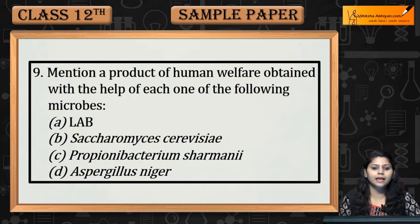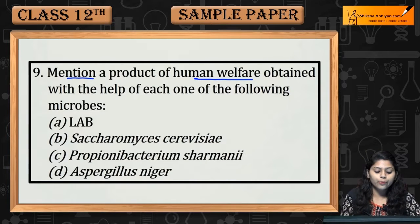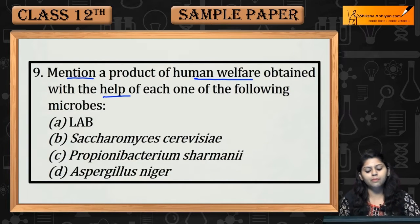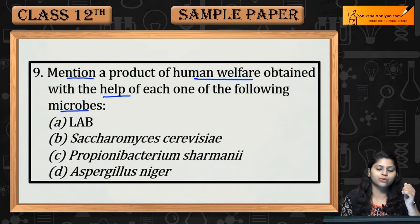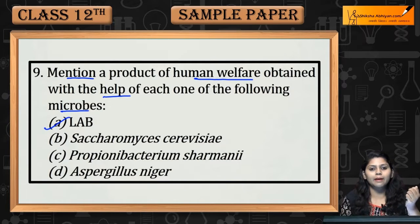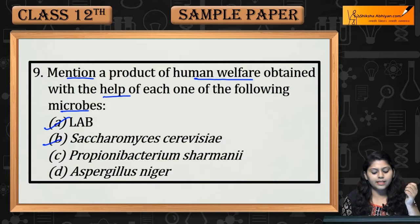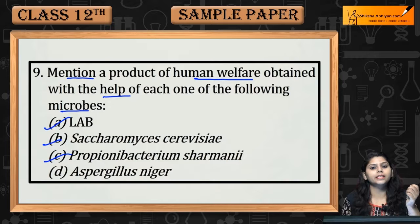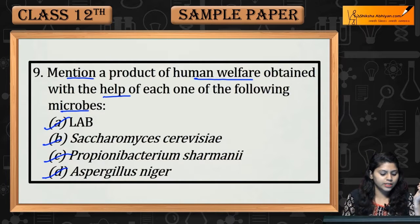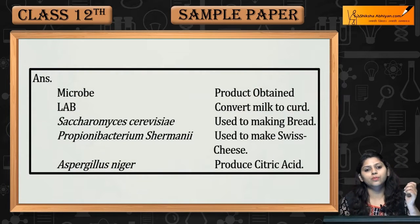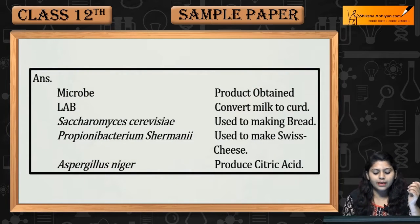Question number nine: Mention a product of human welfare obtained with the help of each of the following microbes — Lactobacillus, Saccharomyces cerevisiae, Propionibacterium sharmanii, and Aspergillus niger.